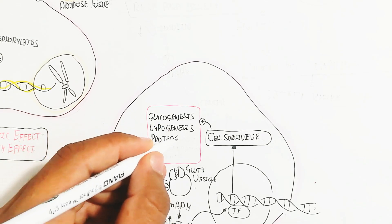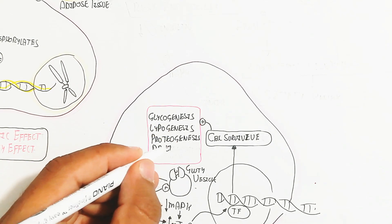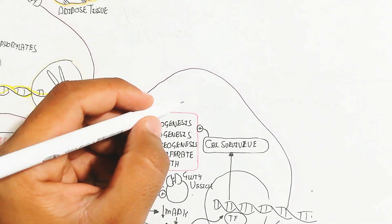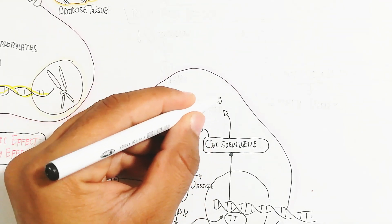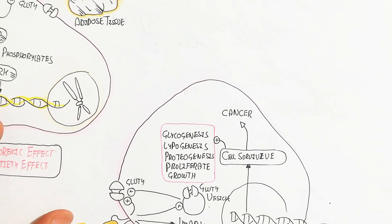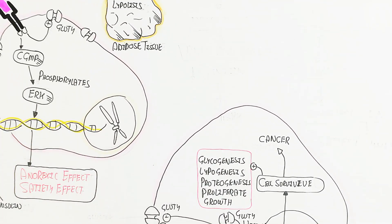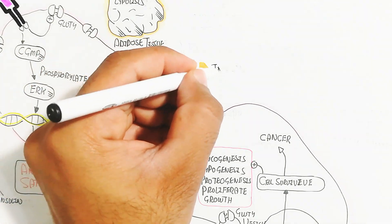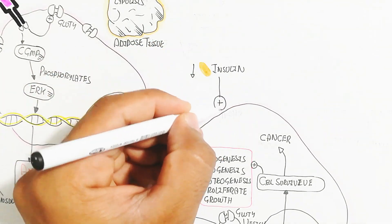In the fed state, glycogenesis, lipogenesis, proteogenesis, proliferation, and growth will occur.